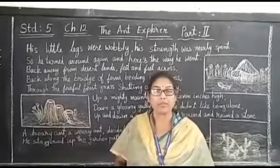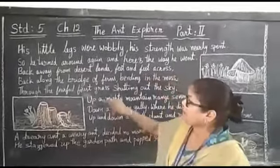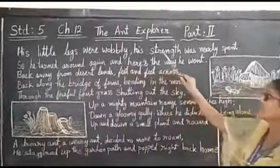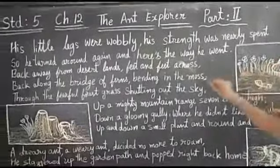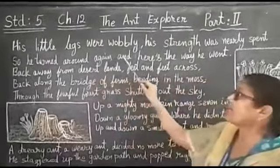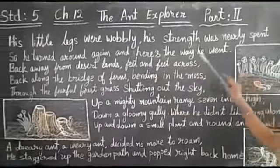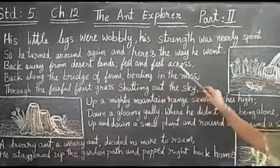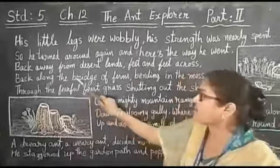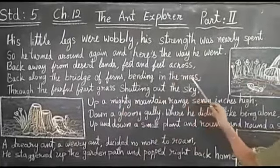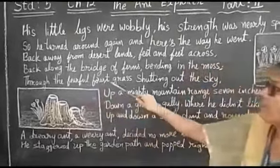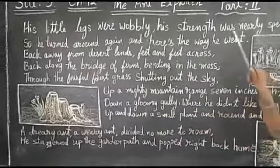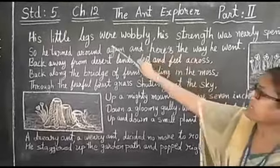Now we will see the next paragraph. His little legs were only his strength, and it was nearly spent. So he turned around and went back away from the desert lands, feet and feet across. Back along the bridge of ferns bending in the moss, through the fearful forest grass shutting out the sky.